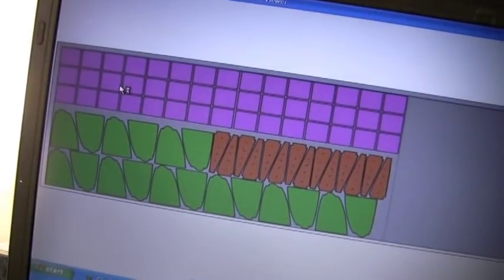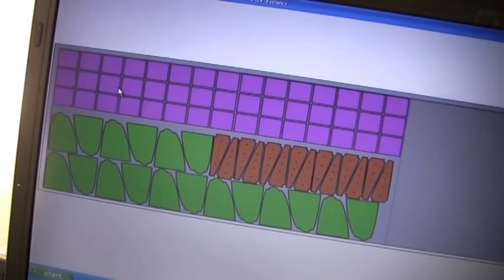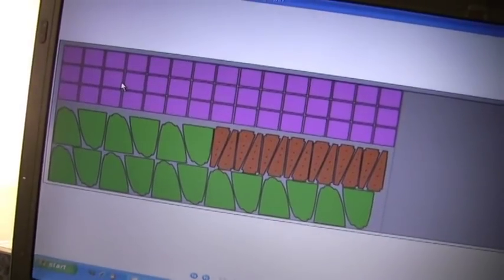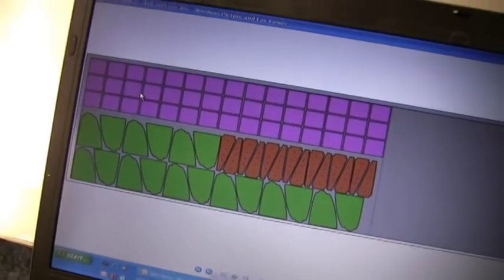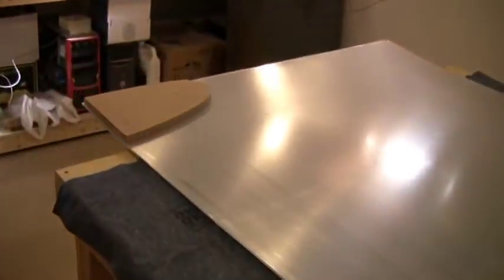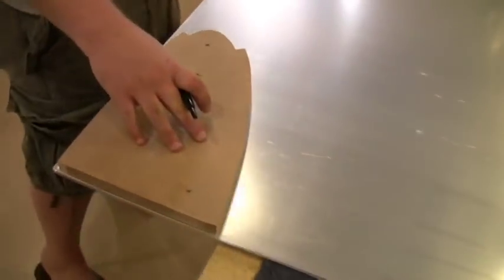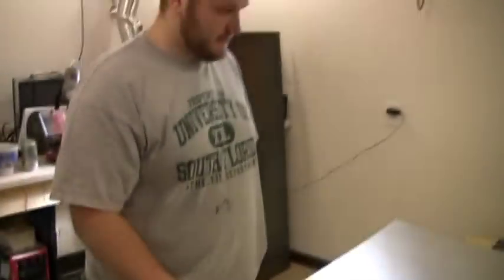Caleb took all of our rib pieces and laid them out so we could know exactly how many pieces we could get on a 4x8 sheet. And now he's about to make our first tracing of our nose rib onto sheet metal.